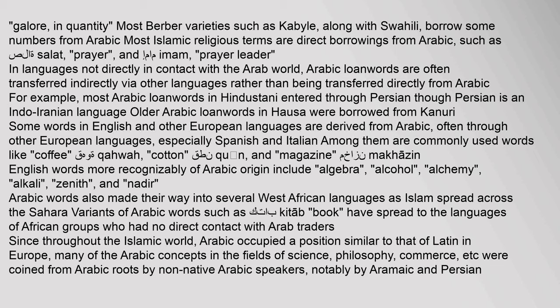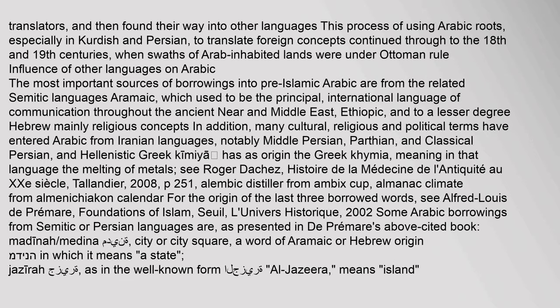Arabic words also made their way into several West African languages as Islam spread across the Sahara. Throughout the Islamic world, Arabic occupied a position similar to that of Latin in Europe. Many of the Arabic concepts in the fields of science, philosophy, and commerce were coined from Arabic roots by non-native Arabic speakers, notably by Aramaic and Persian translators, and then found their way into other languages. This process of using Arabic roots, especially in Kurdish and Persian, to translate foreign concepts continued through to the 18th and 19th centuries, when swaths of Arab-inhabited lands were under Ottoman rule.